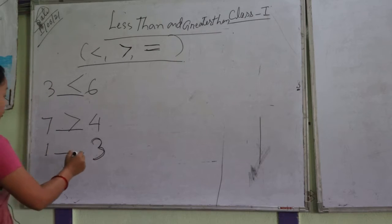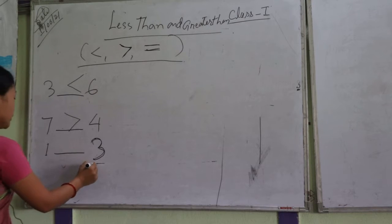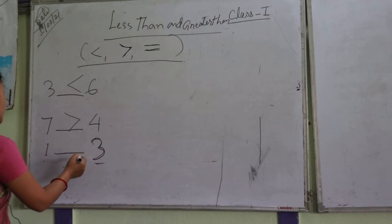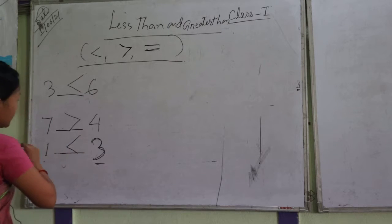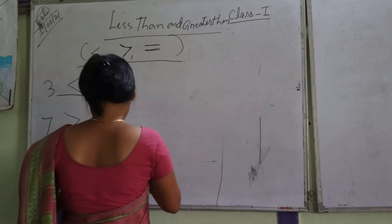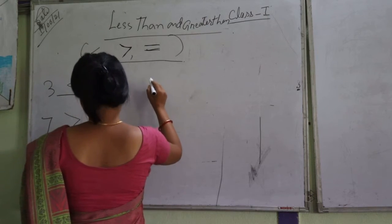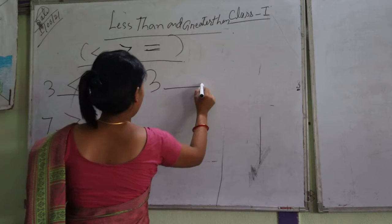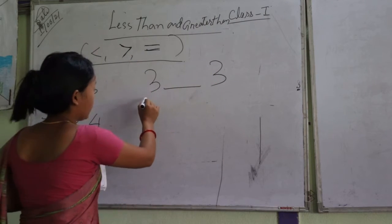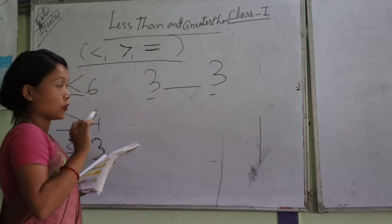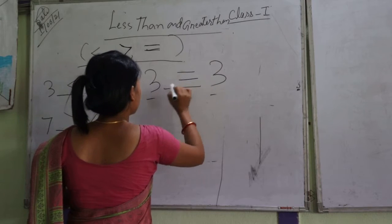Which is the big number? So what is the big number? 1 is less than 3. If we got some numbers like 3, so what is the big number? This number is the same, so what is our number? Now it is equal to 3.